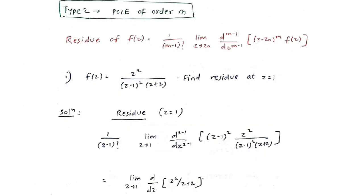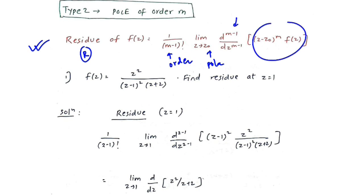Now we will see Type 2, which is the repeated pole. The formula for the residue at a repeated pole is: 1 over (m minus 1) factorial, times the limit as z tends to z-naught of the (m minus 1)-th derivative with respect to z of (z minus z-naught) raised to m into f of z. Here m is the order — how many times the pole is repeated — and z-naught is the value of the pole.